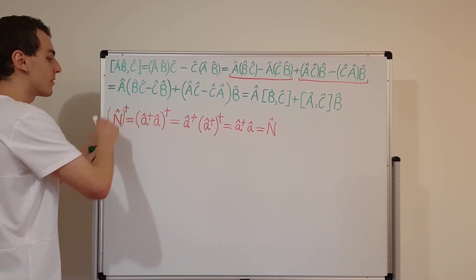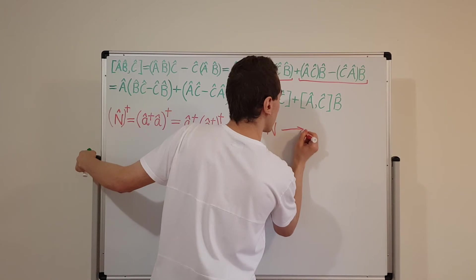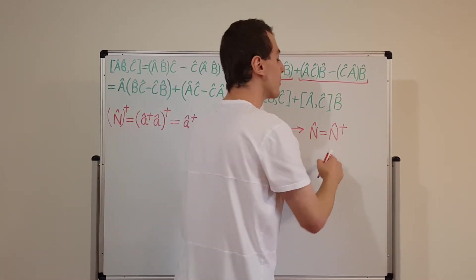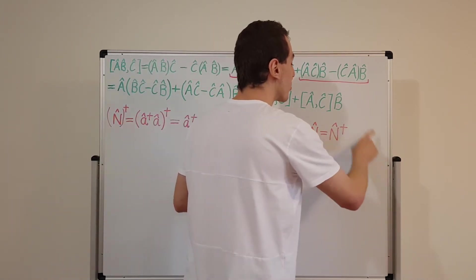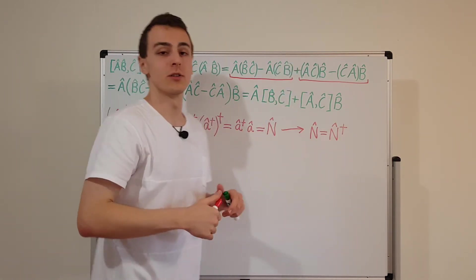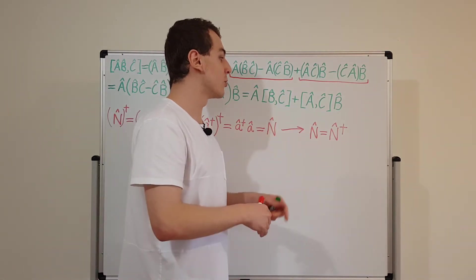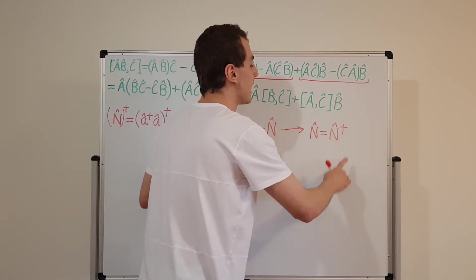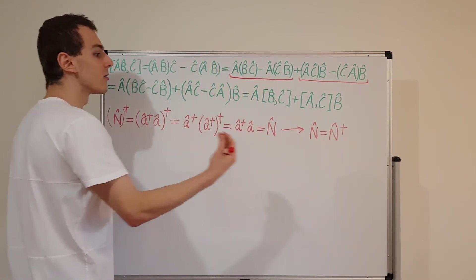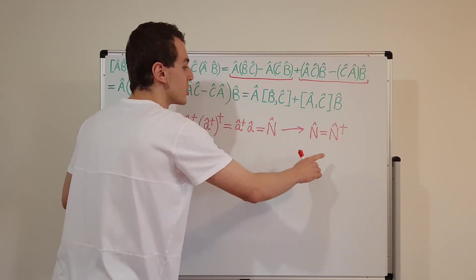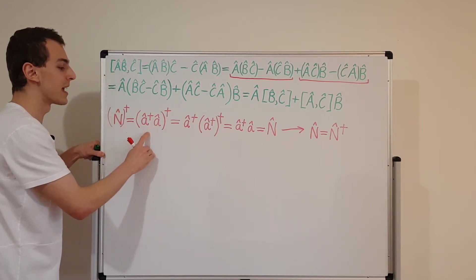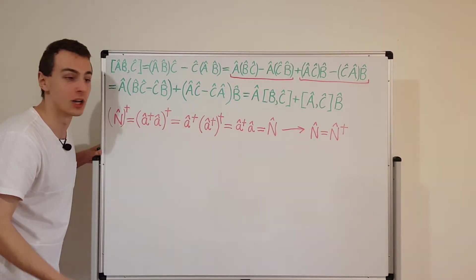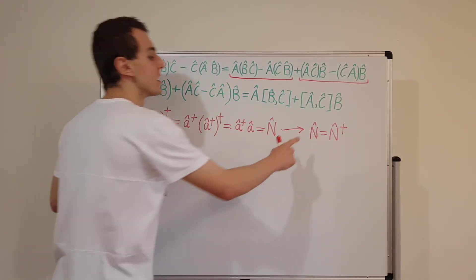This is the same as N by definition. So we've found that N-dagger equals N — the number operator is Hermitian. That means it corresponds to a measurable quantity, and its eigenvalues are real. It tells you the energy level number for the quantum harmonic oscillator, giving an integer that indicates which energy level a particular state is on. The ladder operators, while not Hermitian, allow you to raise and lower energy levels — that's why they're also called raising and lowering operators, or creation and annihilation operators.